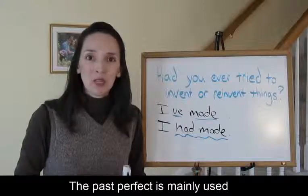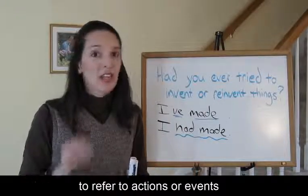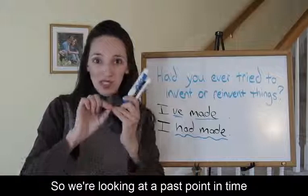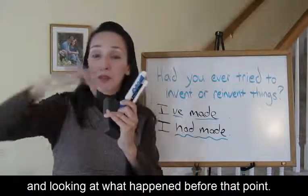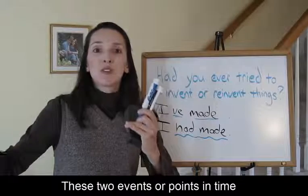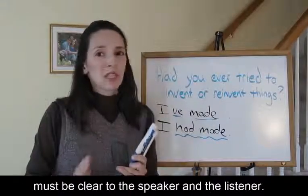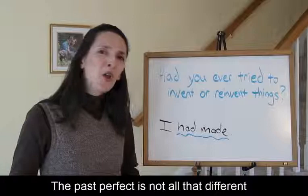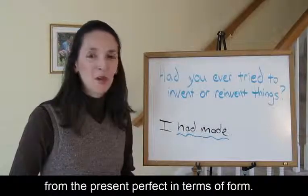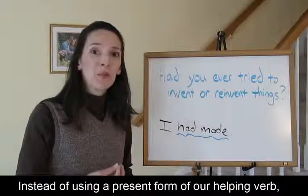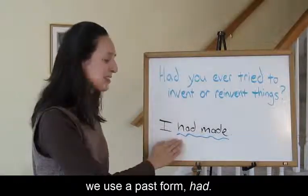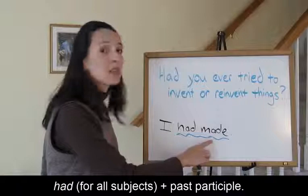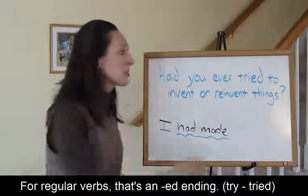The past perfect is mainly used to refer to actions or events that took place before a specific period in time. So we're looking at a past point in time and looking at what happened before that point. These two events or points in time must be clear to the speaker and the listener. The past perfect is not all that different from the present perfect in terms of form. Instead of using a present form of our helping verb, we use a past form, had.